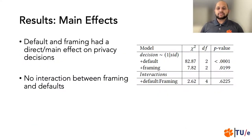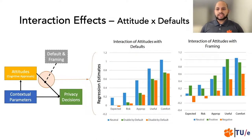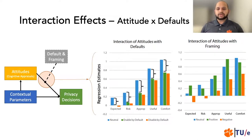While analyzing the data, we created a generalized linear mixed-effects regression model. In line with existing research, we noticed that defaults and framing do have a main effect on privacy decisions. We did not find interaction effects between defaults and framing. However, we did find two-way interaction effects between attitudes and defaults, and attitudes and framing. The y-axis on these plots represents the regression estimates of the effects of attitudes on privacy decisions. You will notice that the regression estimates of attitudes are consistently higher in absence of defaults. More interestingly, in case of framing — that is the plot on the right — the effect of certain attitudes like appropriateness and usefulness is higher in case of positive framing as opposed to neutral framing.